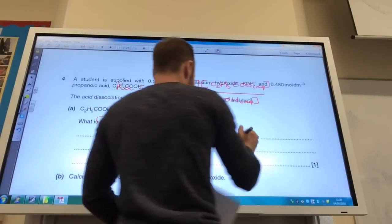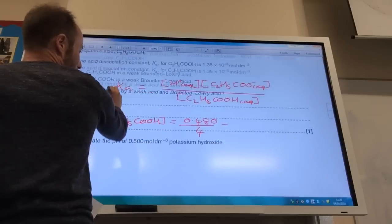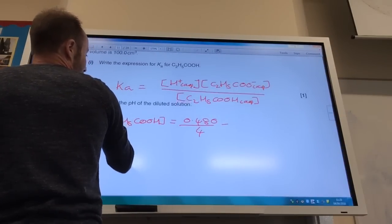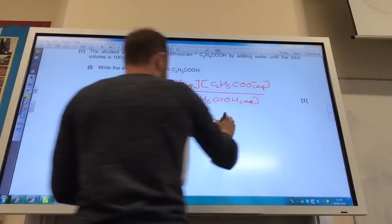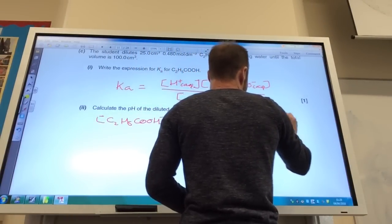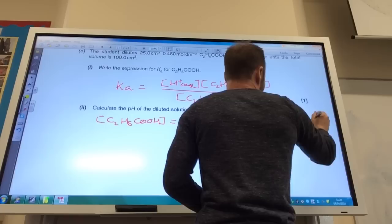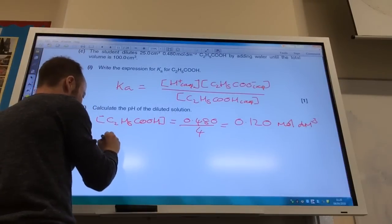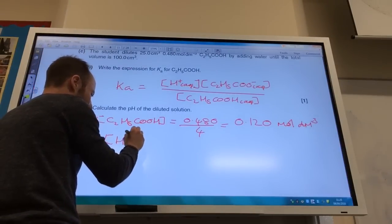Which comes quite nicely to 0.120 moles per decimeter cubed. Okay, I've now got that. So we need to find the concentration of H plus.